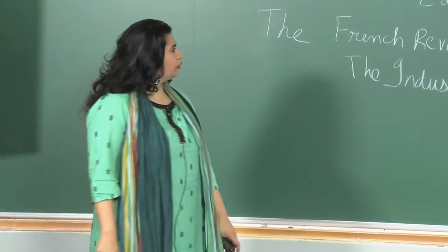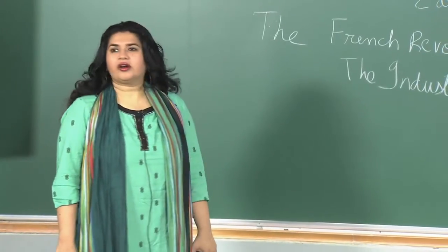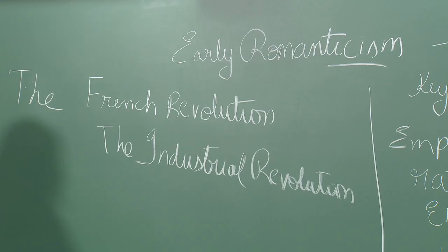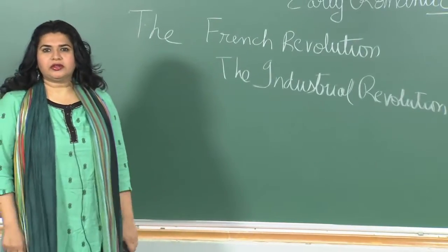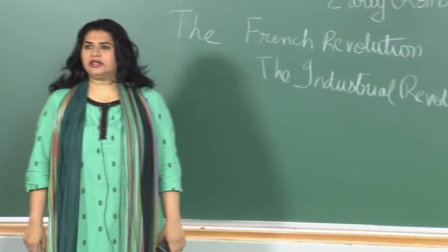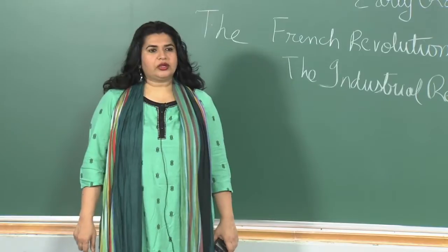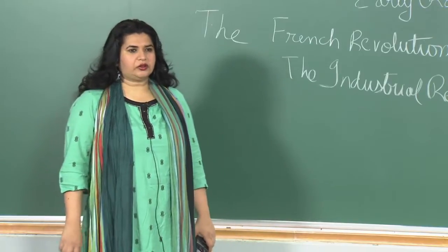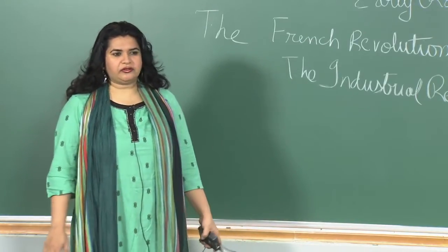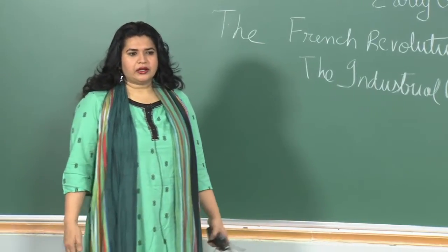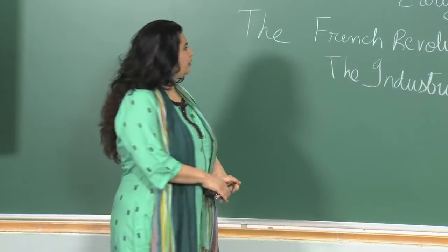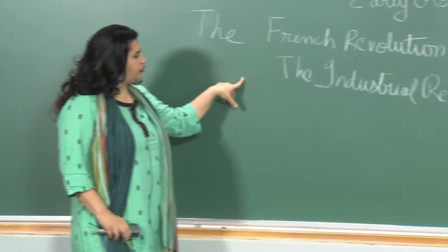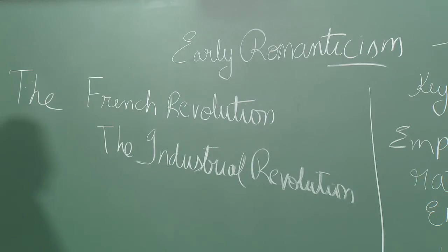Welcome to this lecture on Early Romanticism. Let us talk about the European history between 1760 to 1860, a 100-year period. The chief highlights of this period include two major events: the French Revolution and the Industrial Revolution.